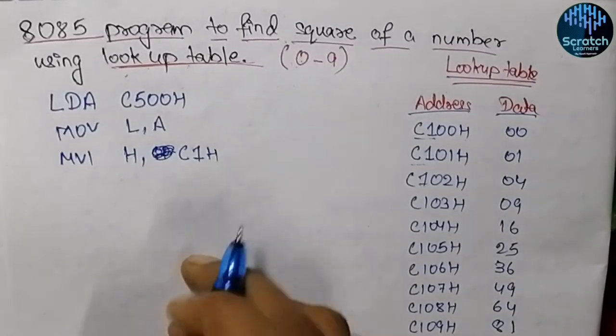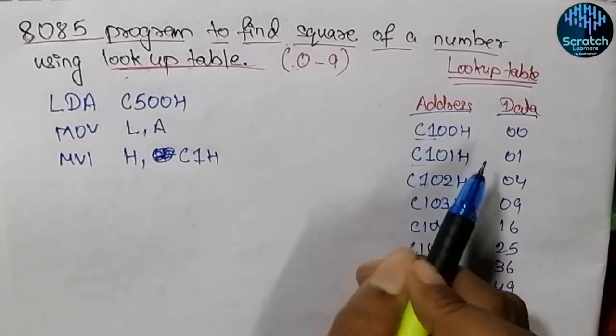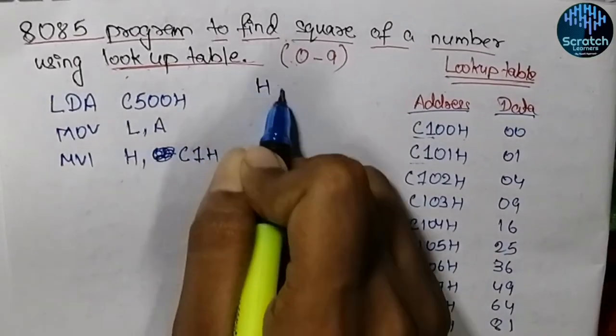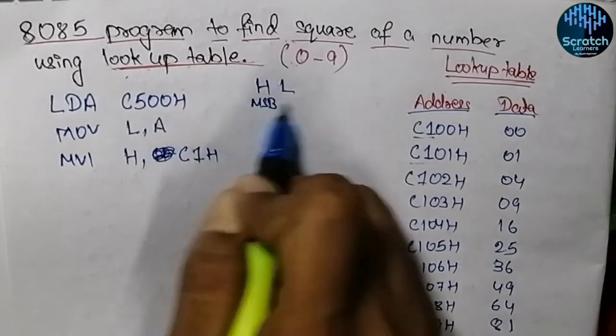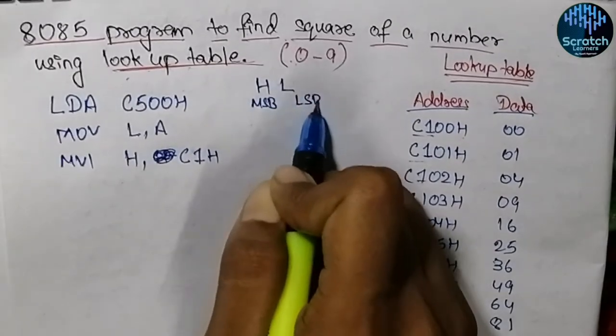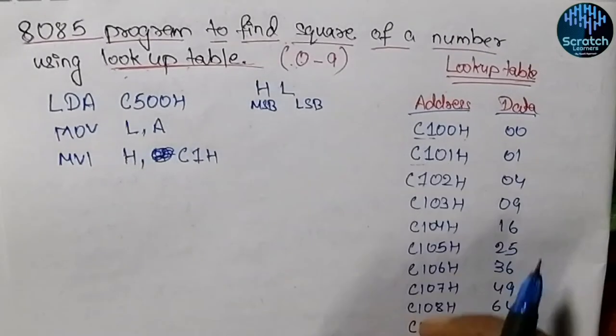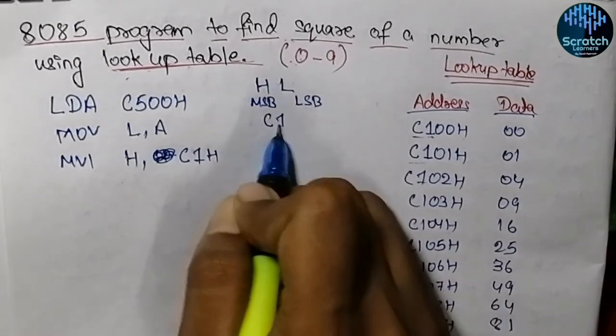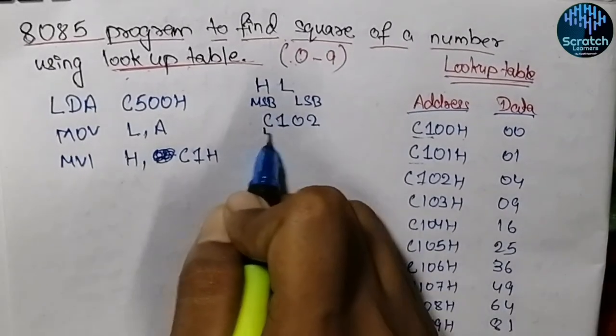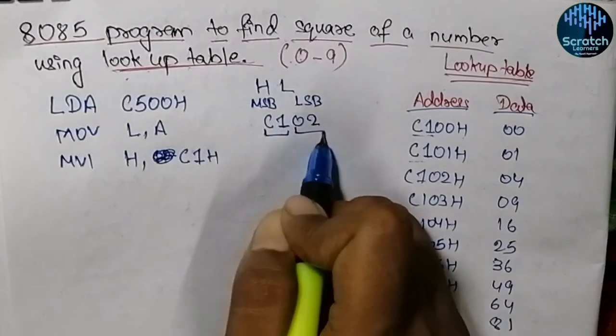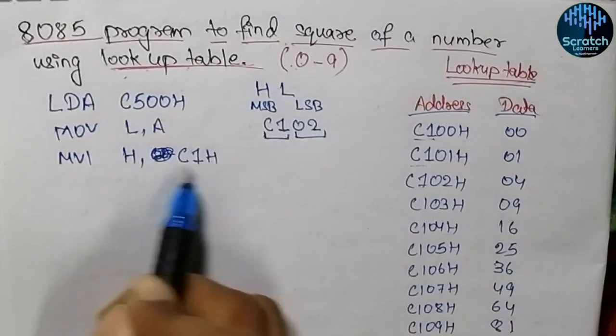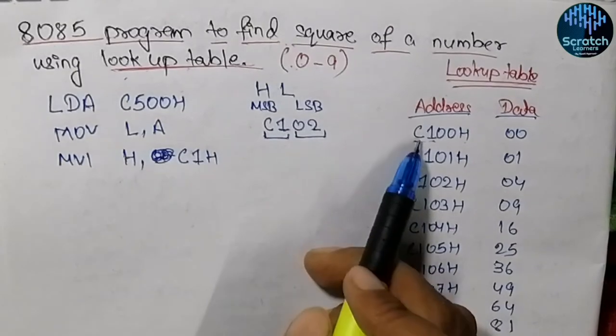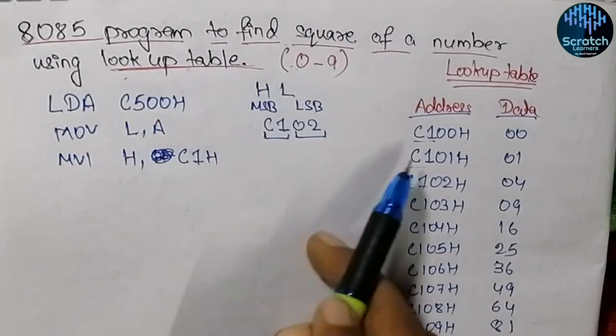Addresses are 16 bits and are referred using the HL pair, where H points to the MSB and L points to the LSB. If we have an address like C102H, then C1 is stored in H register and 02 is stored in L register. We initialize H with C1H, the most significant byte of the lookup table address.